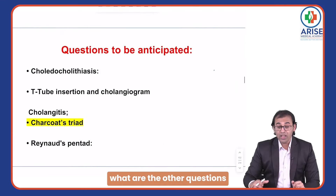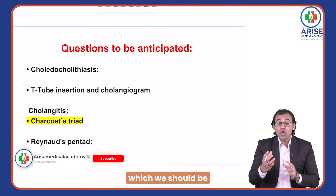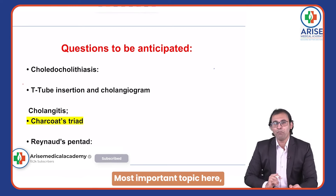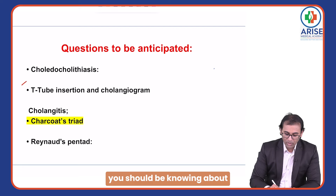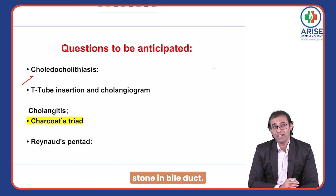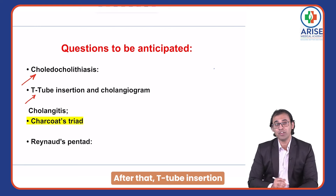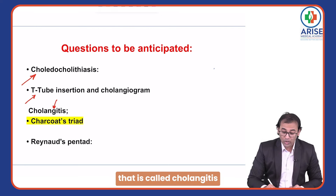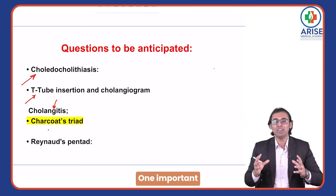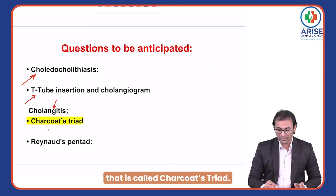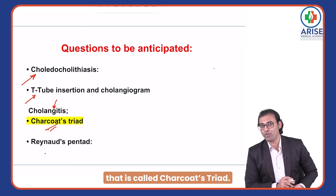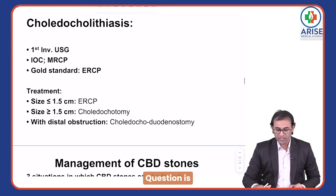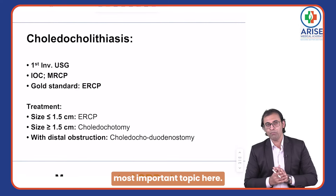The most important exam topics related to the biliary tract are: stones in the bile duct, T-tube insertion, and infection and inflammation of the duct — called cholangitis. Related to cholangitis, one very important and famous triad is Charcot's triad, and if untreated it can progress to Reynolds' pentad.